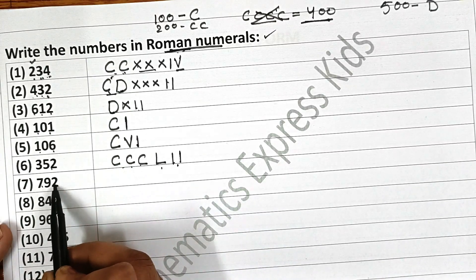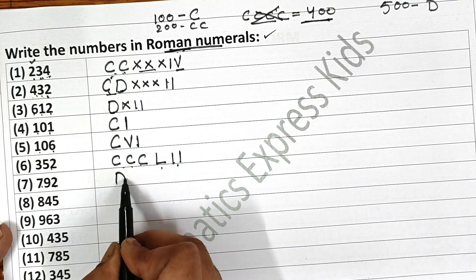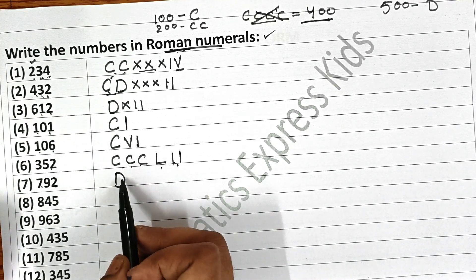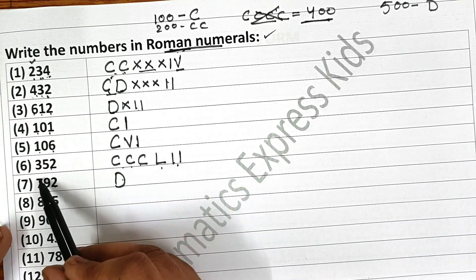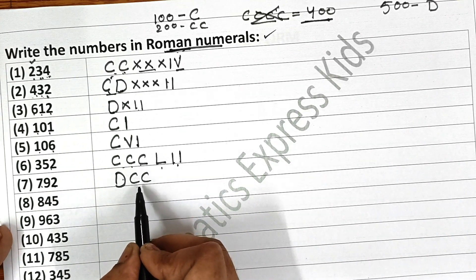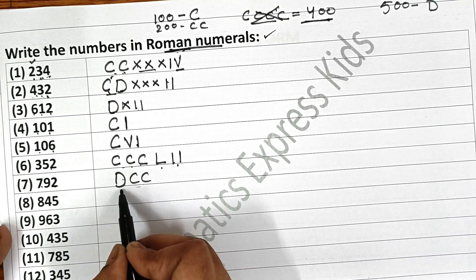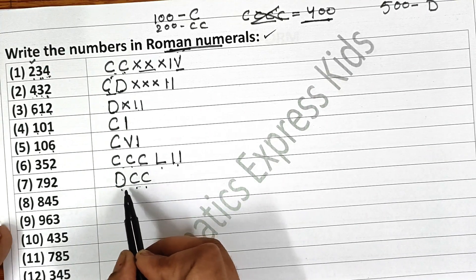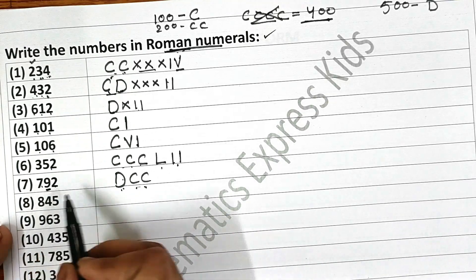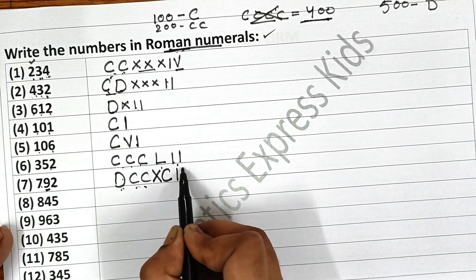Now 792. For 700, we know 500 is D. You have to add 200 to 500 to get 700. As you can see, I have written the 200 on the right side — writing on the right side means you are adding. So first I wrote 500, then 100 and 100, meaning 500 plus 200 is 700. Now for 90: first write 100 and then subtract 10 from it. So that gives 90, and then 2.